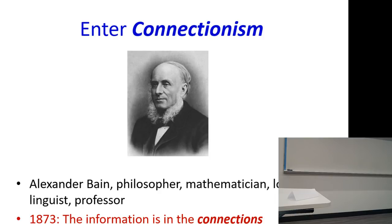The first real modern theory for this came up in 1873. This guy, Alex Bain, was a philosopher, mathematician, logician, linguist, and professor. Back in those days, science hadn't progressed very far, so most people were basically experts in every field.